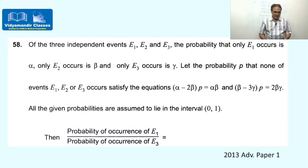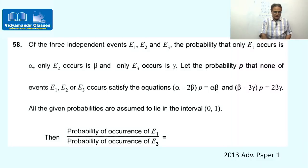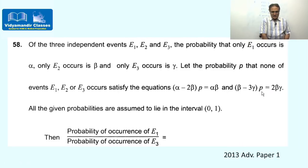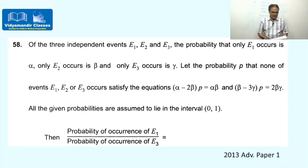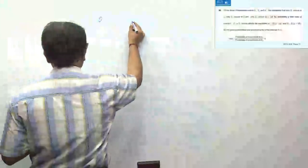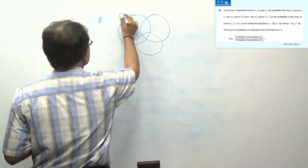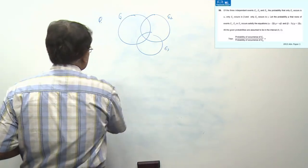The final question: of three independent events E1, E2, E3, the probability that only E1 occurs is α, only E2 occurs is β, only E3 occurs is γ, and P (none of E1, E2, E3 occurs) = p. These satisfy the relations: (α−2β)p = αβ and (β−3γ)p = 2βγ. Given that p lies in the open interval (0,1), find the ratio P(E1)/P(E3).